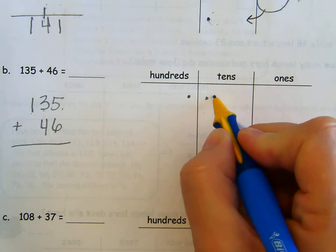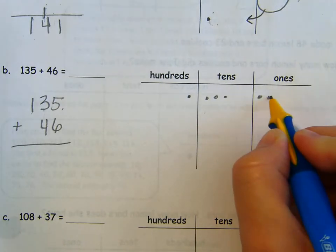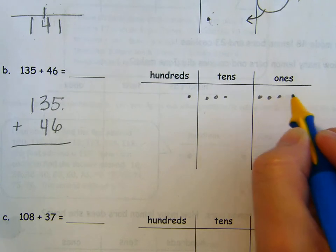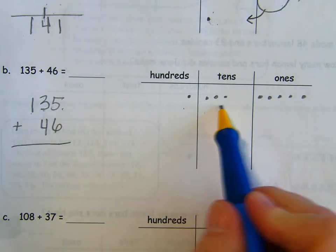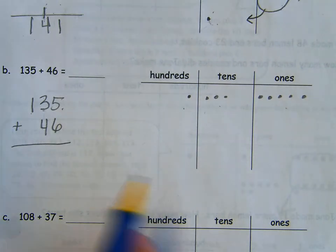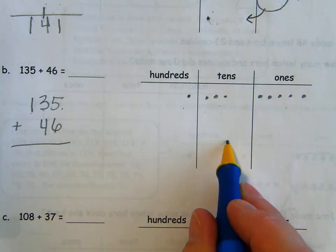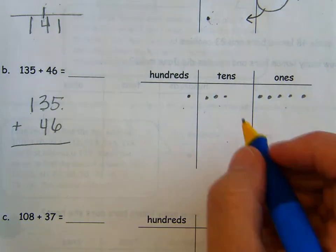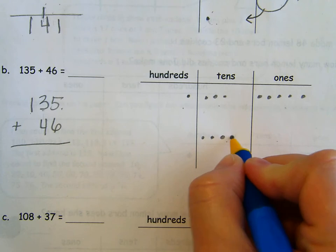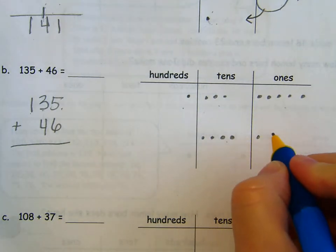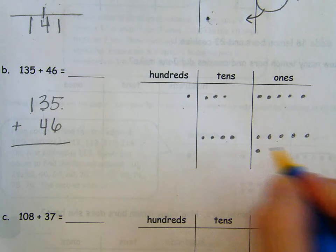Counting 100, 10, 20, 30, 131, 132, 133, 134, 135. 100, three tens, five ones. I'm going to come down here. No hundreds. I'm going to need four tens and six ones. 10, 20, 30, 40, 41, 42, 43, 44, 45, 46.